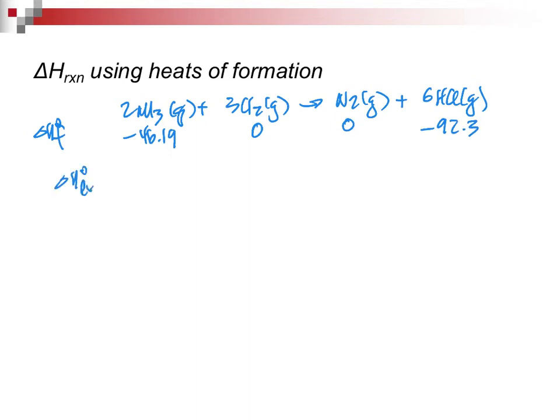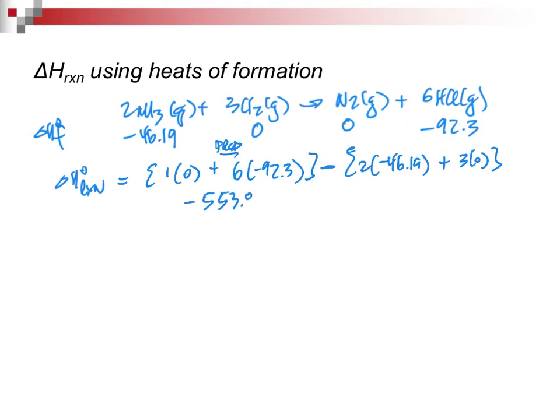So, since this is using heats of formation, we're doing Hess's Law. And, I'm going to say 1 times 0, plus 6 times a minus 92.3. These are my products. I'm going to subtract from that 2 times minus 46.19, plus 3 times 0. Again, I'm going to write all my numbers out, minus 553.8, plus, because it's a negative negative, it'll be a plus 92.38, and that's going to give me a minus 461 kilojoules. This is using delta H zero formation.